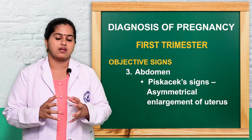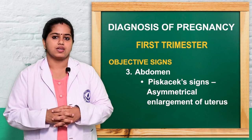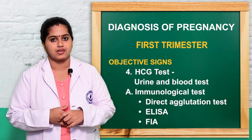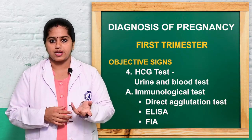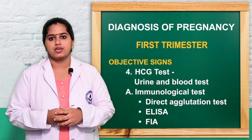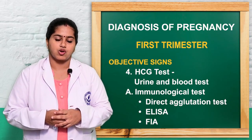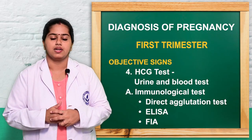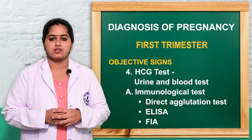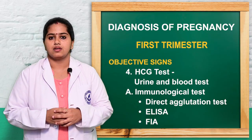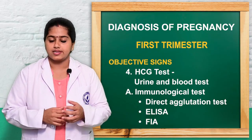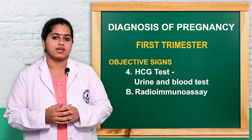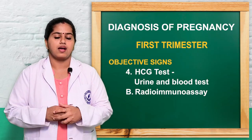Next is the HCG test in the first trimester, which can be performed via urine and blood tests. Methods include direct agglutination test, immunological tests without radioisotope, and immunoassay. Specific methods include the COD test, enzyme-linked immunosorbent assay (ELISA), and fluorescent immunoassay. Radioisotope immunoassay is also available. These tests detect the presence of HCG in urine or blood and serve as confirmation of pregnancy.